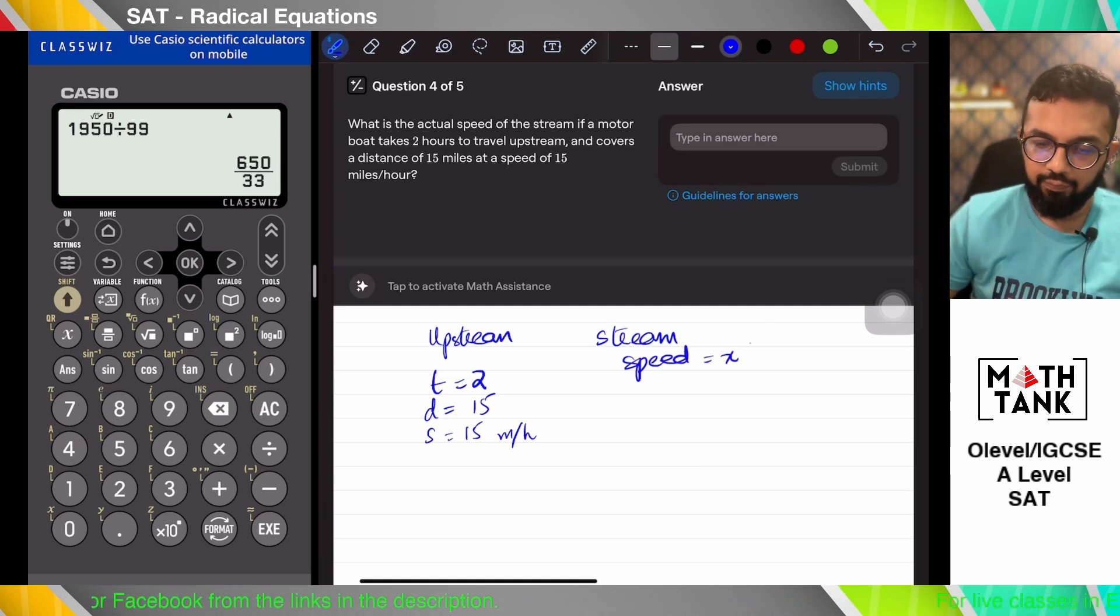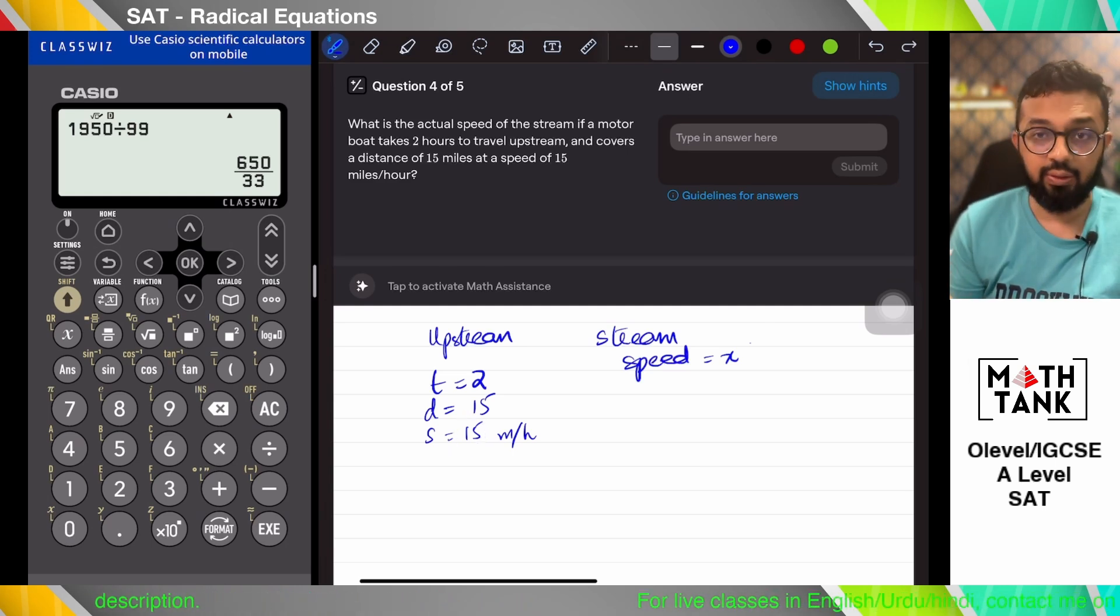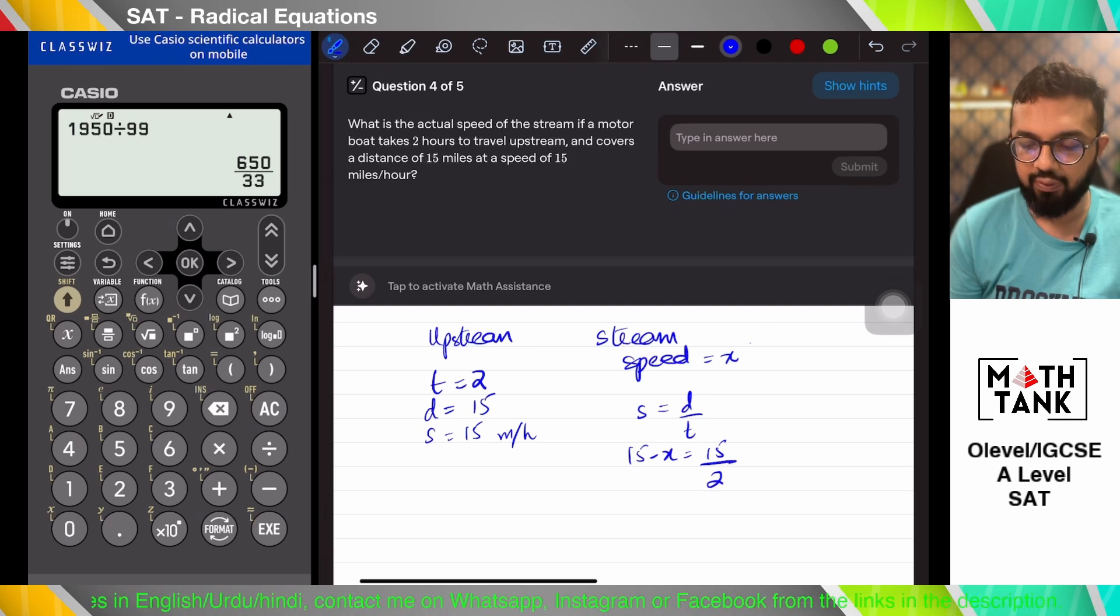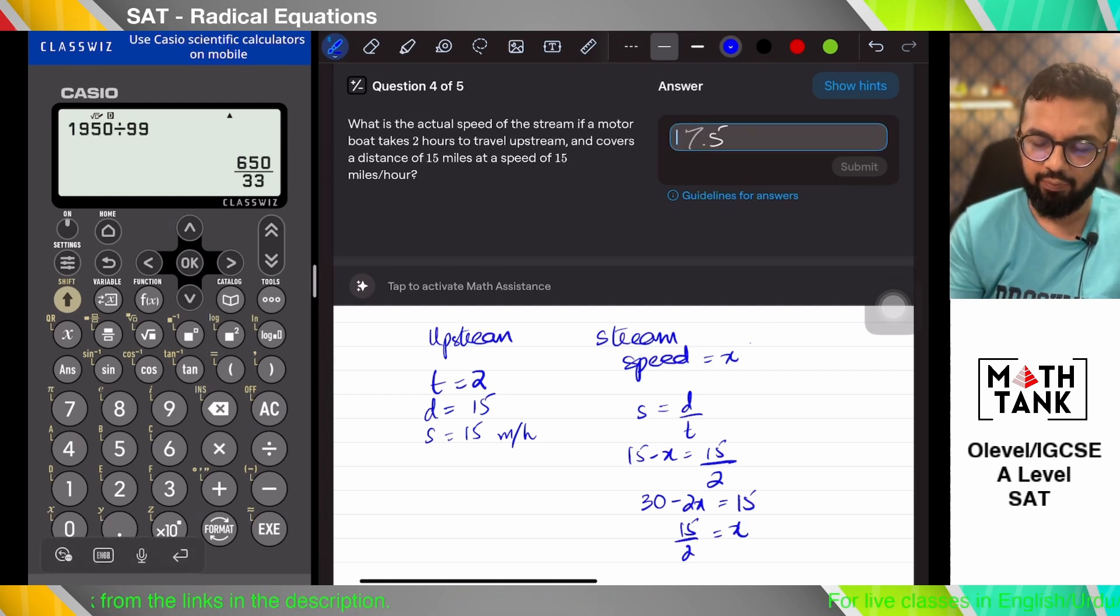Okay, so if the stream has a speed of x. If the boat was traveling at 15, it would take one hour. But since the boat is traveling slower, I'm going to say that speed equals distance over time. The speed is 15 minus x. I'm still covering a distance of 15, but I have a time of two. So 30 minus 2x equals to 15. I think that should work.